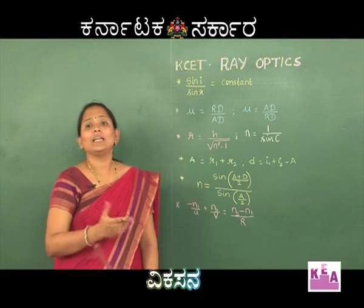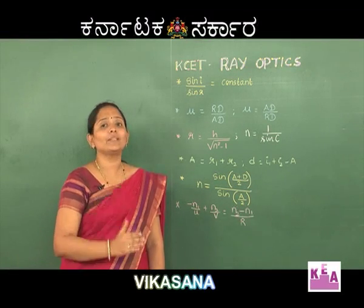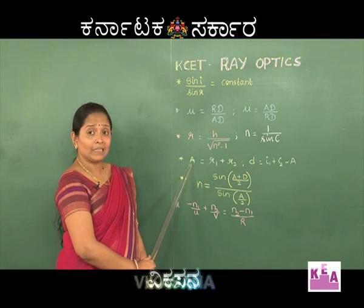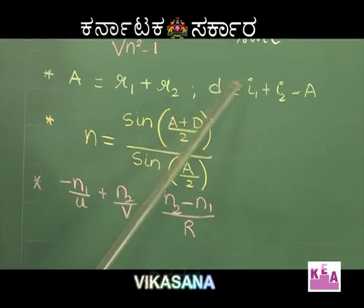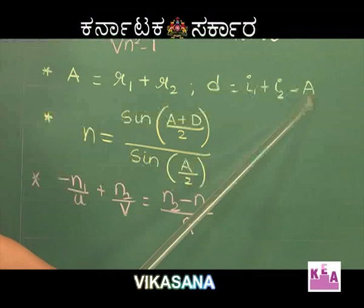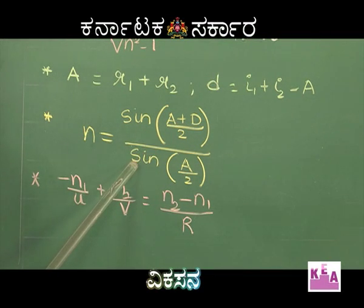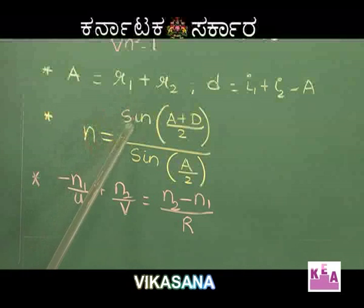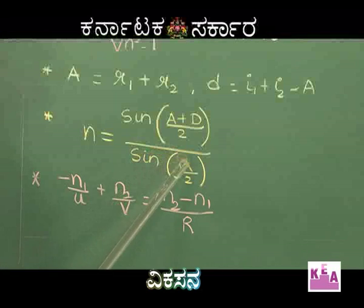Now moving on to refraction through a prism. In the prism, the angle of the prism is given by A = r1 + r2, and the angle of deviation is given by i1 + i2 − A. The refractive index at minimum deviation is given by n = sin((A + D)/2) / sin(A/2).